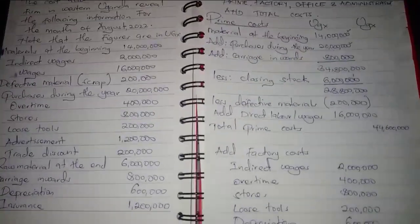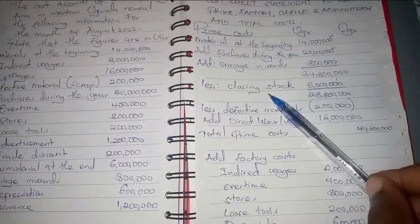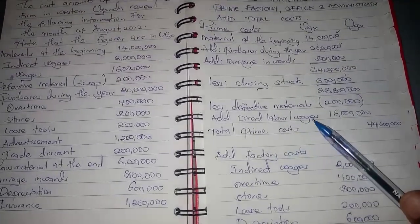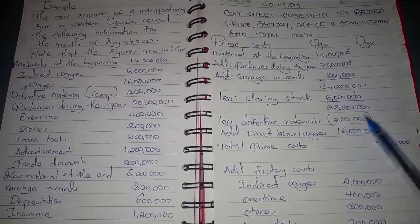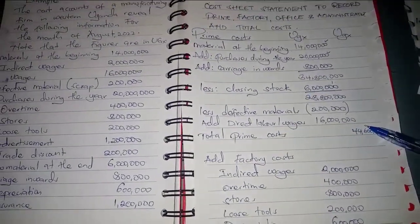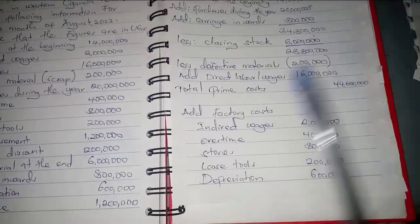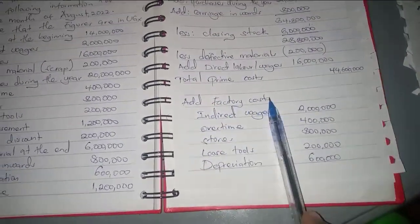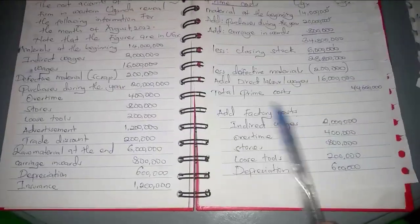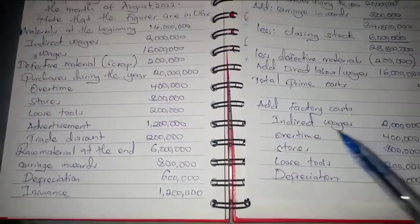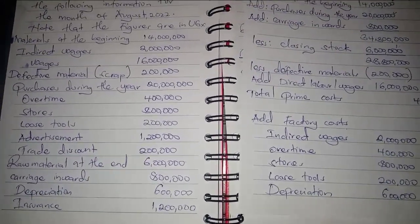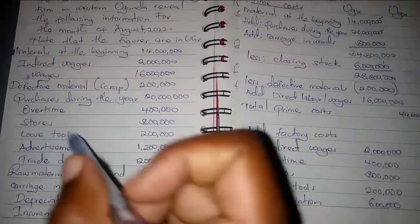Remember: everything direct is under prime costs and everything indirect is under factory costs. So direct labor or wages goes here under prime costs. When we add all of these together, what we get is the total prime costs. Then we move on and add factory costs, which are the factory overheads — the indirect costs.